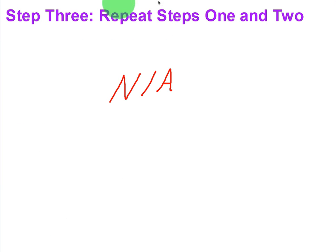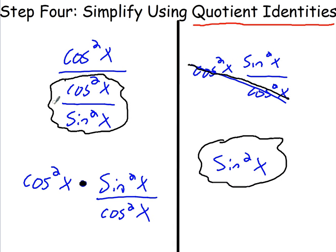So just always do step three just in case, but since it's not applicable, we're going to check it off and move to step four. And that's how algorithms work. You don't always use them, but you always follow the procedure.